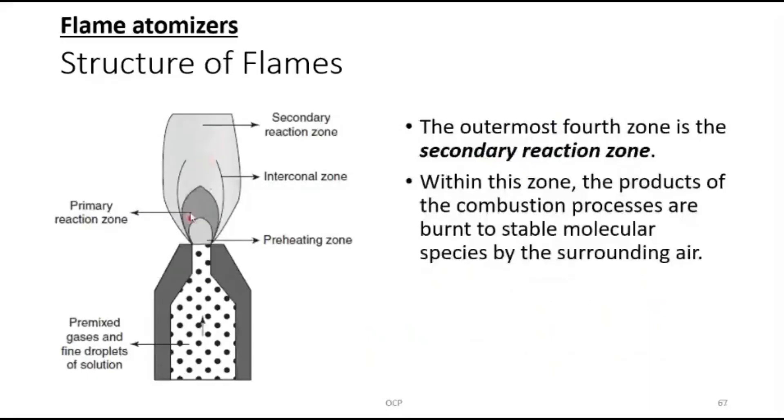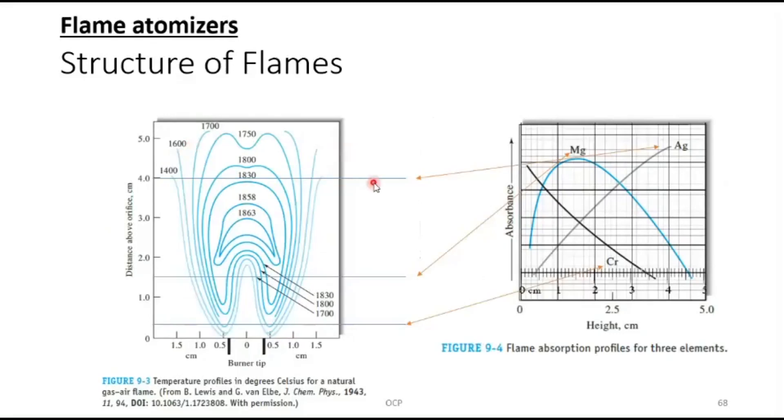The last zone is the outermost fourth zone, called the secondary reaction zone. Within this zone, the products of the combustion processes are burnt to stable molecular species by the surrounding air. In this region most of the reaction is occurring. Products that are formed which are unstable are converted to stable products in this region.